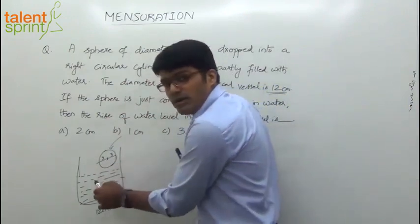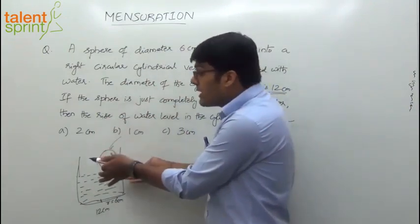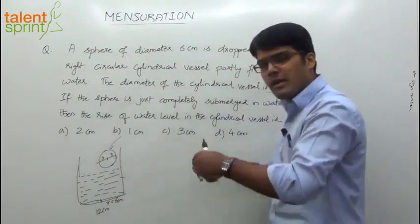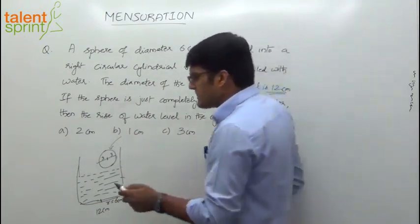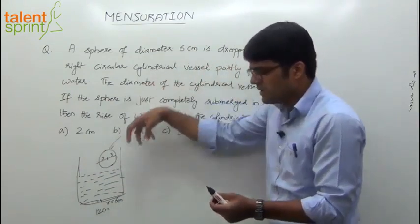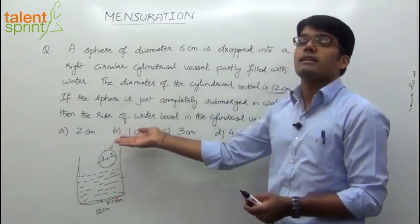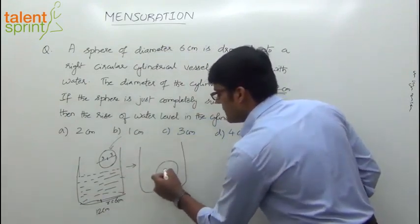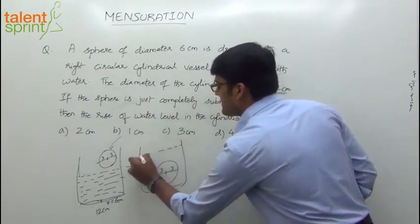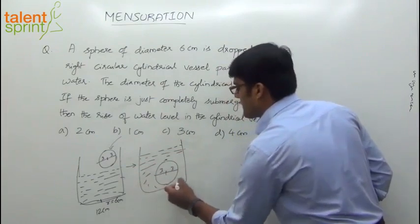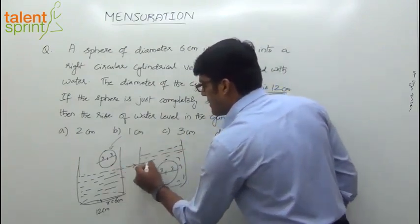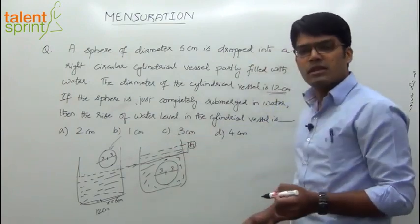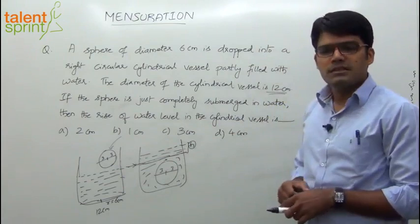When the sphere submerges in the water, the water level will rise. The water level will rise because there is still some space left. If it were completely full, the water would flow out. We need to find out the rise in the level of water. How much did the water level rise? Let's assume the water level comes up by h. When the sphere goes down with radius 3 cm, the water level has gone up — how much is the rise in the water level h?